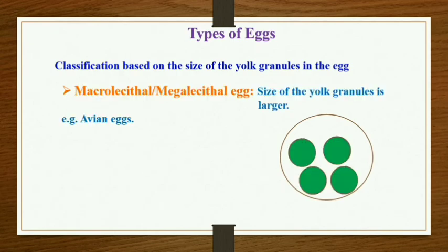Moving on to the next type, which is macrolecithal or megalecithal eggs. Here the size of the yolk granules is very large. If you can see in the diagram, the outer circle is the egg and the inner green color structures are the yolk granules, and the size of those yolk granules is very large.